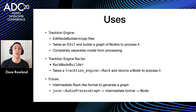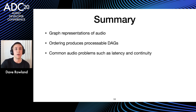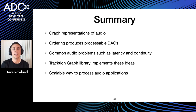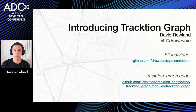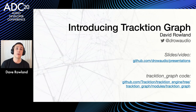In summary: we've looked at graph representations of audio, seen how post-order depth-first search produces processable directed acyclic graphs, examined common audio problems like latency and continuity, seen how the Traction Graph library implements those ideas, and seen how this is a scalable way to process audio applications. You can find me on Twitter at @drowAudio; slides will be on my drow-audio-presentations GitHub repo, and the code is in the Traction Engine repository on the traction-graph branch.